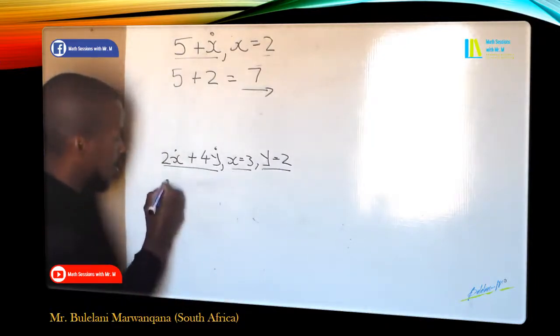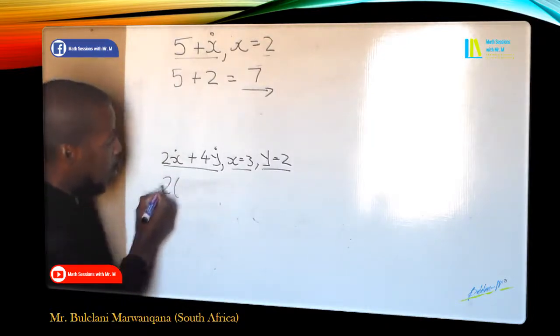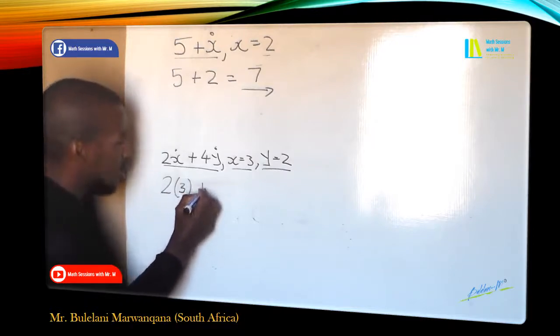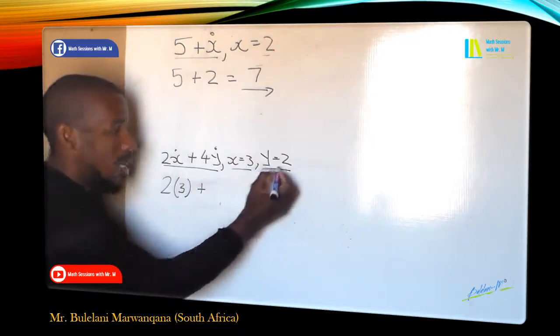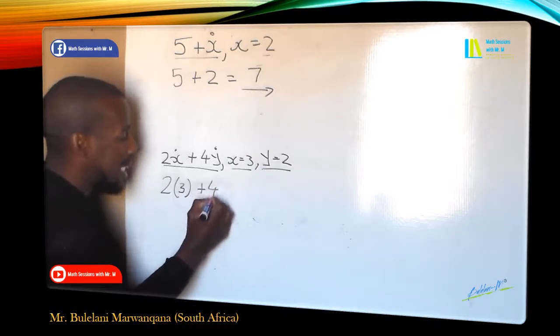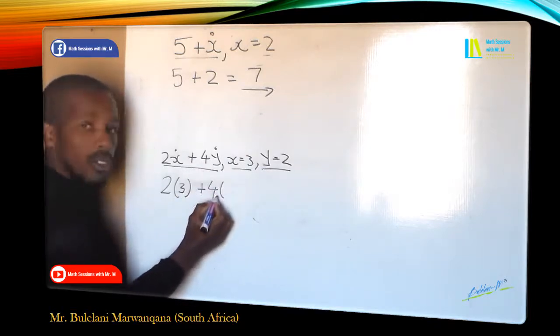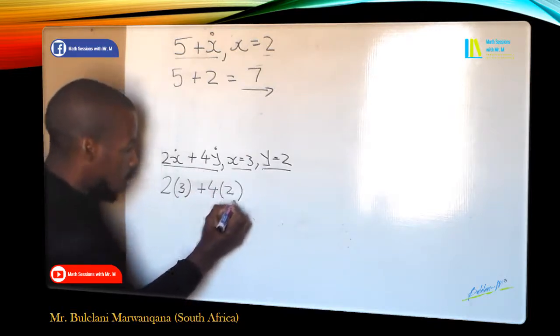So wherever you see X, you put in a 3. 2X is 2 times 3 plus wherever you see Y, Y is equal to 2, you are going to input in a 2. 4Y, 4 times 2. So we have 2 times 3 which is 6 plus 4 times 2 which is 8.